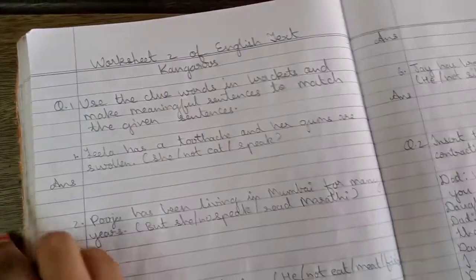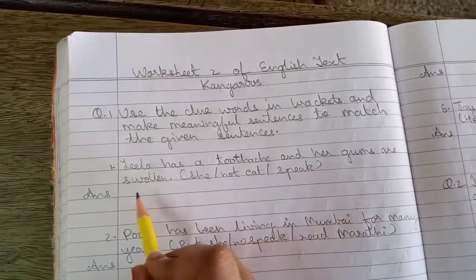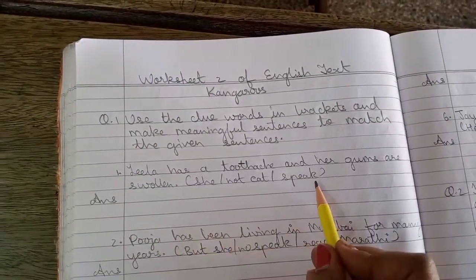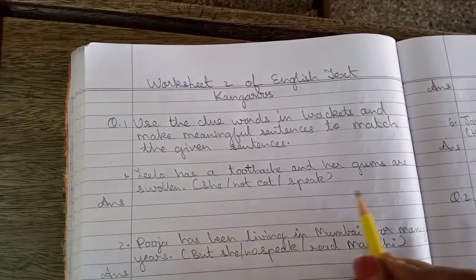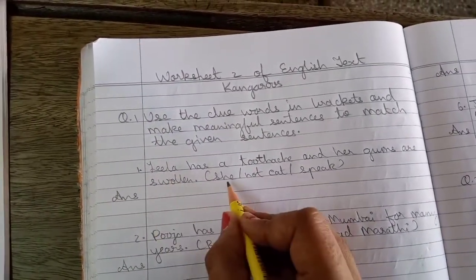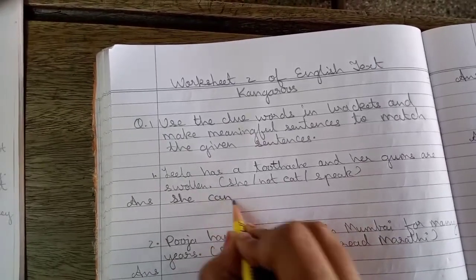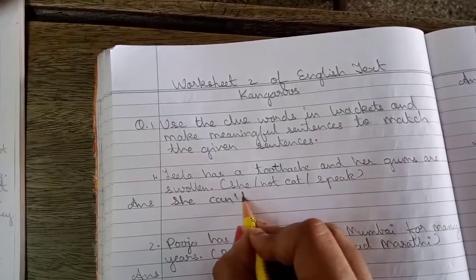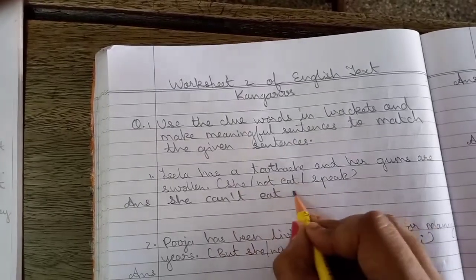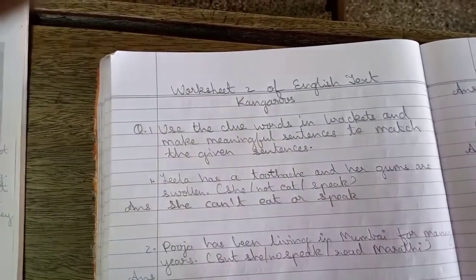Number 1: Leela has a toothache and her gums are swollen. Now with the help of this bracket we have to write meaningful sentences. The answer will come — instead of Leela we will write 'she'. She can't eat or speak.